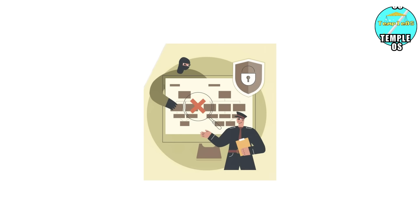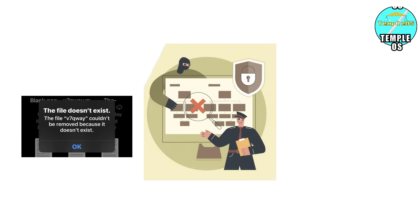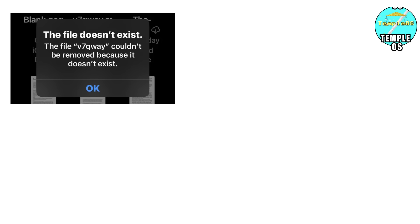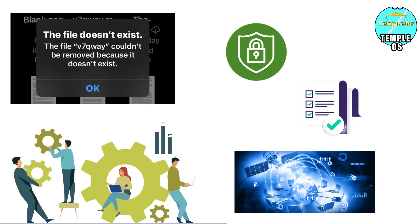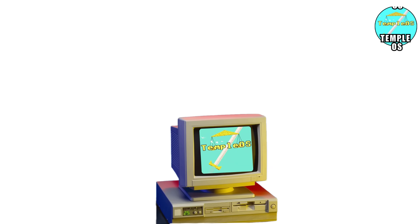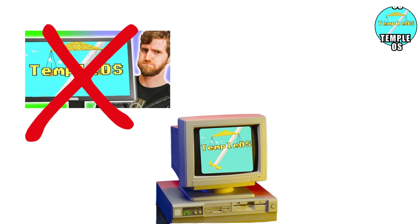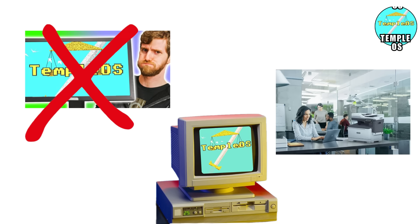Corporate security policies were updated to blacklist Temple OS entirely. It wasn't banned for wrongdoing — it was banned because it simply couldn't exist safely in enterprise ecosystems built around security, compliance, and network stability. Temple OS remains a fascinating piece of computing history, but it's incompatible with the modern world, especially offices with printers.